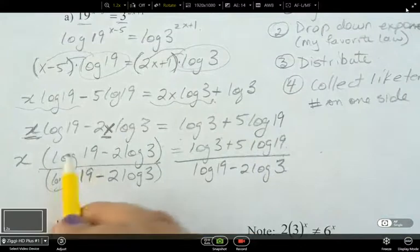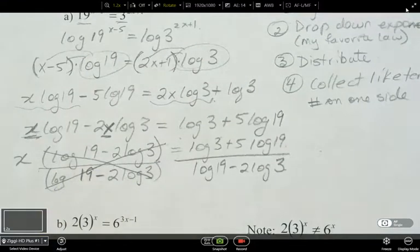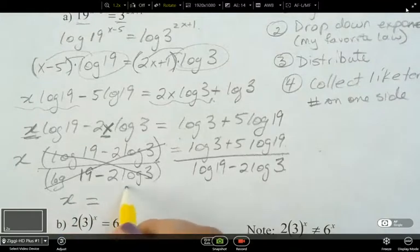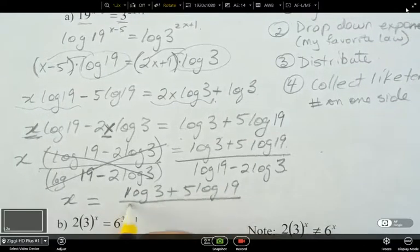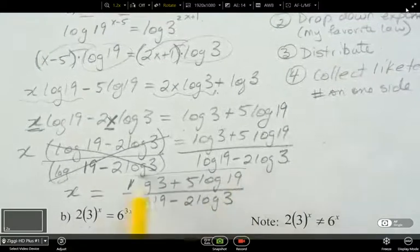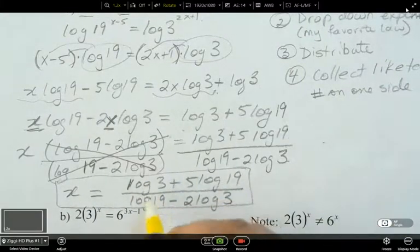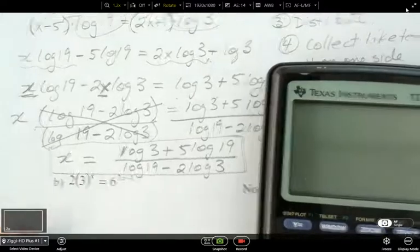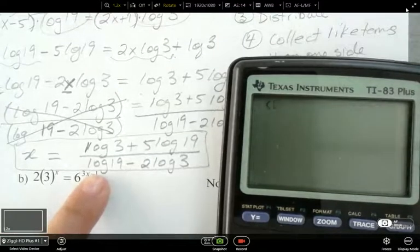So now log 19 minus 2 log 3. Any ideas of what's going to happen next? What are we going to do? What are we solving for? What's our goal here? We're solving for x. So I can divide both sides by what's here. So what happens to this right here? It is reduced to 1. So that's why we can just write x equals, and then I've got this beautiful log 3 plus 5 log 19 over log 19 minus 2 log 3.